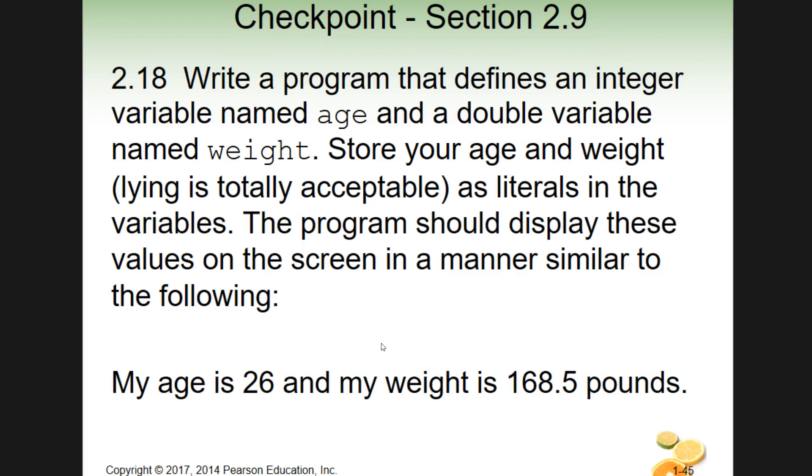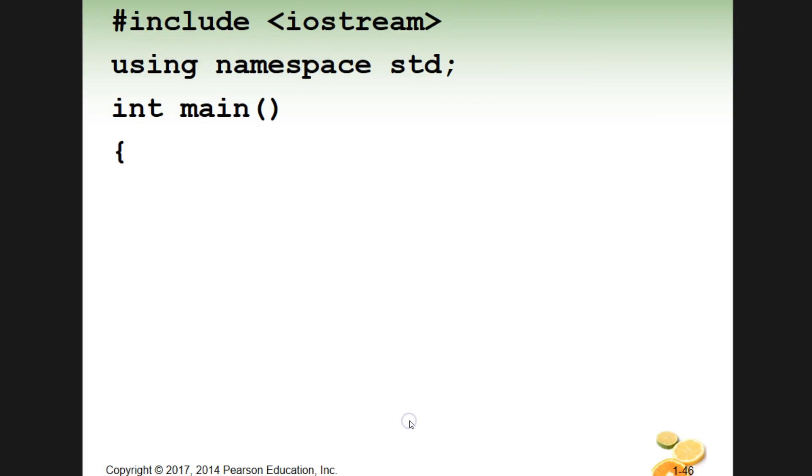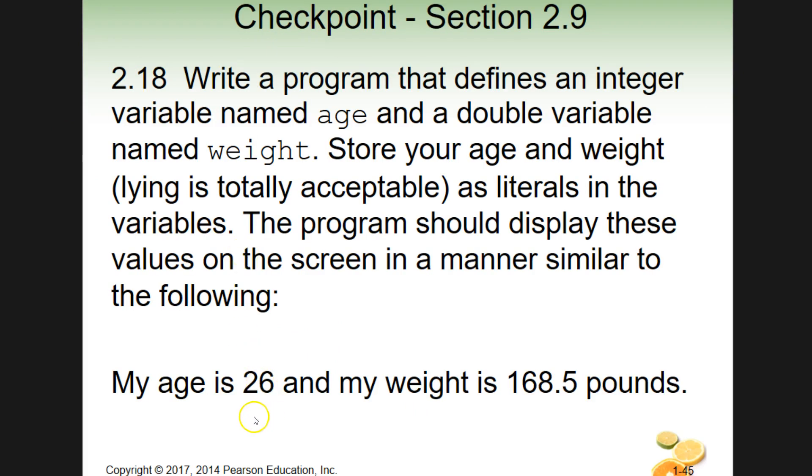Okay, let's go ahead and take a look at this little checkpoint here. Write a program that defines an integer variable named age and a double variable named weight. So store your age and weight. I put in here lying, totally acceptable. These numbers are nowhere close to me, I guess, down here. So anyway, you're storing those as literals in your variables. And then the program should display these values on the screen in a manner similar to the following. So in a sentence form. I mean, of course you're going to start this out the same old way, kind of. Maybe have your comment lines above this saying what this is. Go ahead and I'll leave this on the screen for now. Pause the video and see if you can create this and get this output using variables, rather than just a string to output this line. Go ahead and pause the video and then come back in as soon as you're done with it.